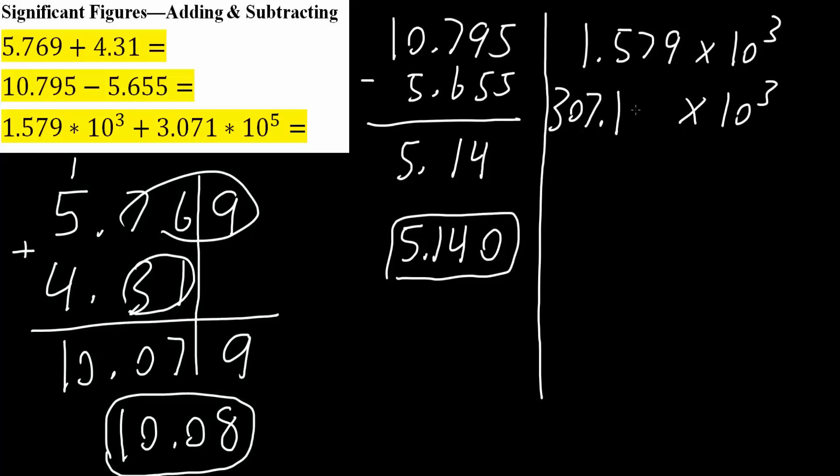This right here is equivalent to this because I could say that 3.071 times 10 raised to 5 is equal to 307.1 times 10 raised to 3.